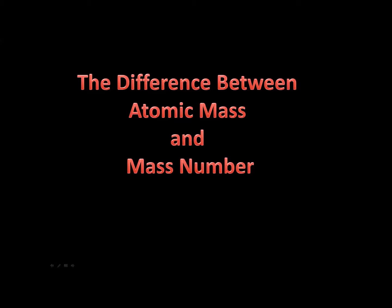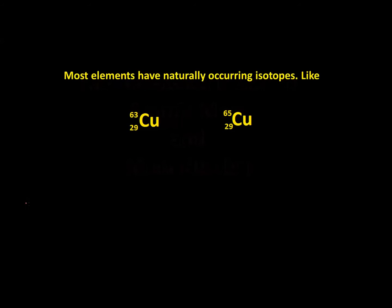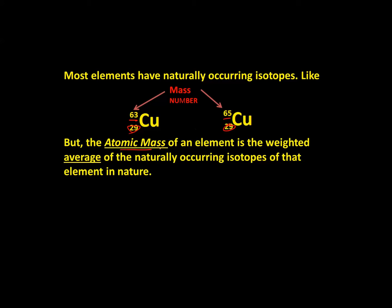In this lesson we're going to look at the difference between atomic mass and mass number — they are absolutely positively not the same. Most elements have naturally occurring isotopes, like copper-63 and copper-65. We know they're isotopes because they both have the same atomic number but different mass numbers. The mass number tells you what the isotope is — it's the mass of each isotope in amu and tells you the total number of particles in the nucleus.